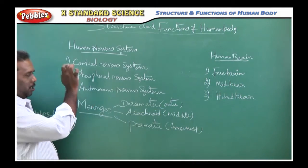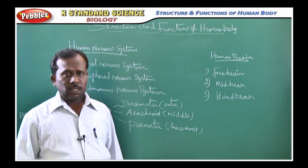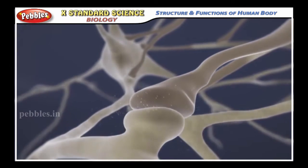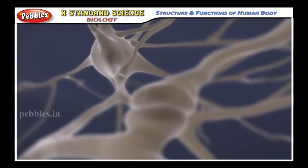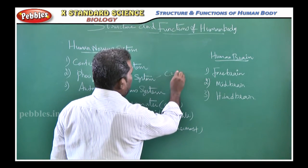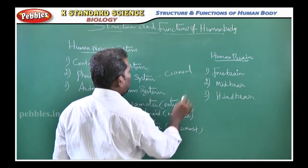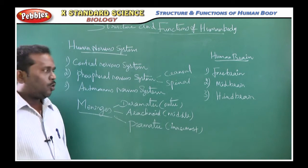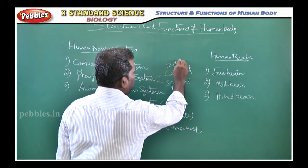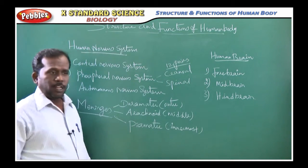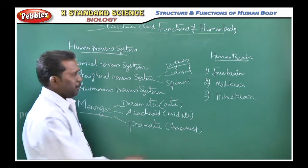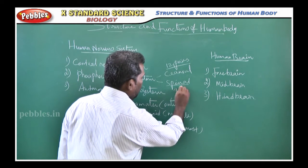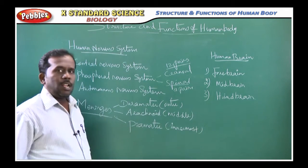Next, the peripheral nervous system — that means the nerves that arise from the brain and spinal cord. One important one-mark question is asked: how many cranial nerves and spinal nerves are in the human body? Cranial nerves are 12 pairs and spinal nerves are 31 pairs.